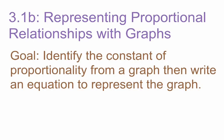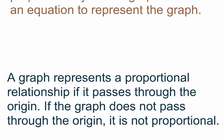A couple of key notes. First, a graph represents a proportional relationship if it passes through the origin — that point (0, 0). On the other hand, if the graph does not pass through the origin, it is not proportional. So if you see a graph that touches the origin, it is a proportional relationship; if the line does not touch the origin, it is not proportional.